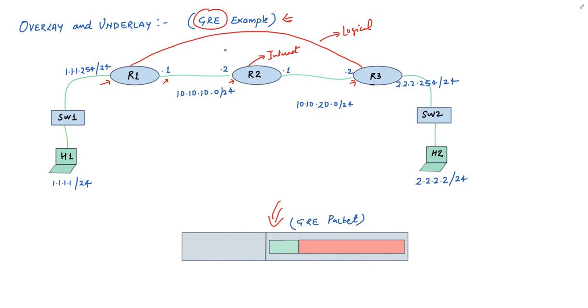The most important part is that R1 and R3 should be reachable. Here, this reachability is provided by the underlying IPv4 network between R1 and R3 via R2. It doesn't matter what routing protocol is running between R1, R2 and R3.